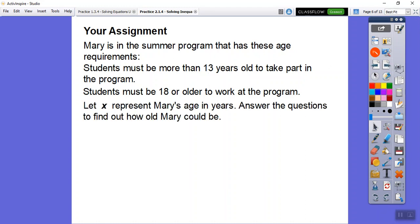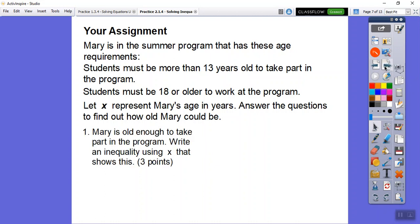We're going to let X represent Mary's age in years. I would have chosen M for Mary, but the book is directing us to choose X, and then answer the question to find out how old Mary could be. So here's the first one. Mary is old enough to take part in the program. Write an inequality using X that shows this. So more than is the greater than symbol. So it's X is greater than 13. Remember they're whole numbers, so Mary could be 14 or 15 or 16 and so on.